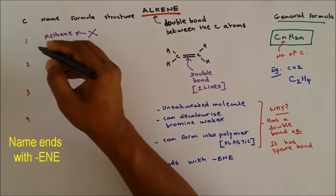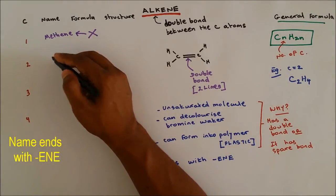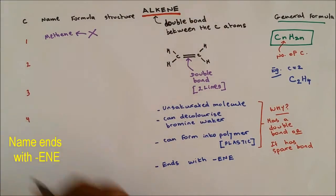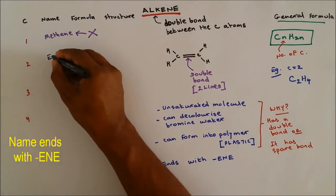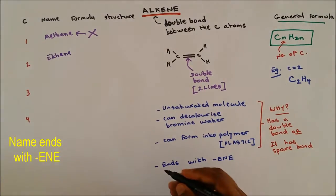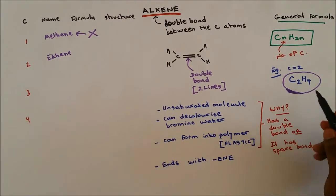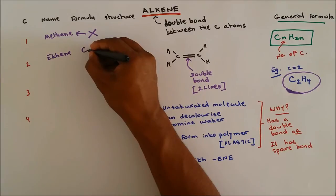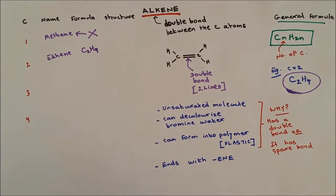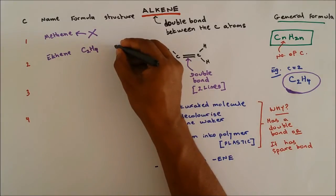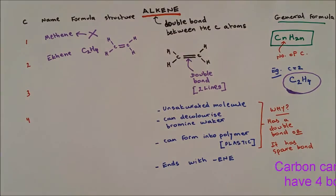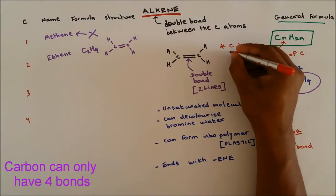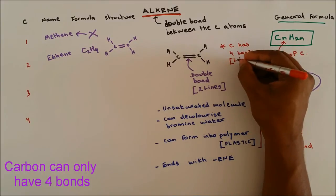We learned that in the previous video that two carbons will be called ethane for an alkane molecule, but this is alkene so it will be called ethene. Now the formula - ethene is 2 carbons. We already learned that if it's 2 then hydrogen is 4, so C2H4. Now the structure is already over here. Important thing: carbon has four bonds, which means four lines.